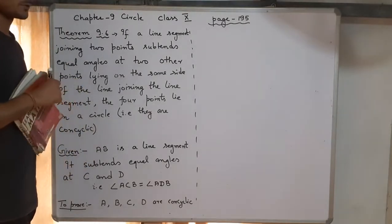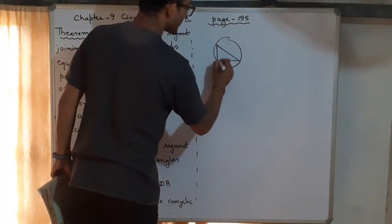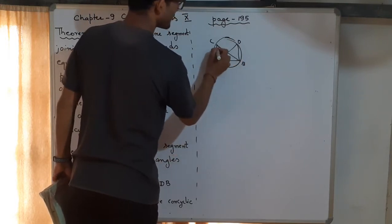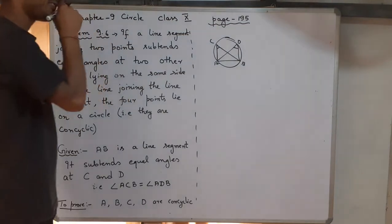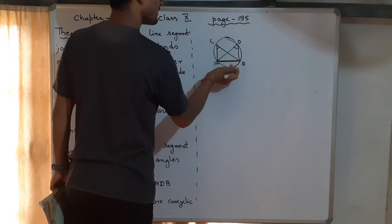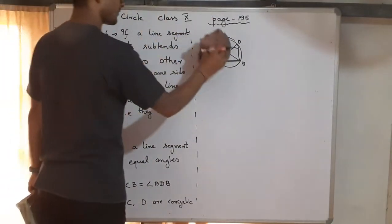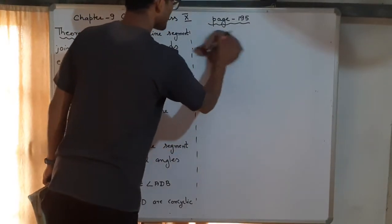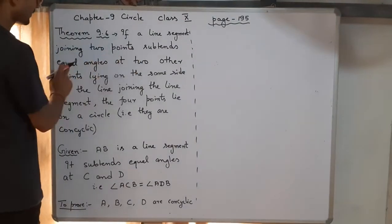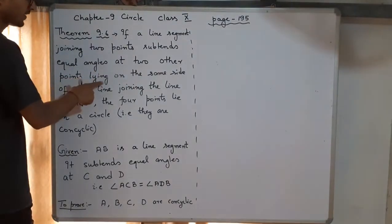Now we will do the opposite. Let me quickly recall what 9.5 said — it said that these two angles are equal. Now what Theorem 9.6 says is: if these two angles are equal... the way of telling it is a little different, so it has to be carefully understood. The theorem is: if a line segment joining two points subtends equal angles at two other points lying on the same side of the line joining the line segment.